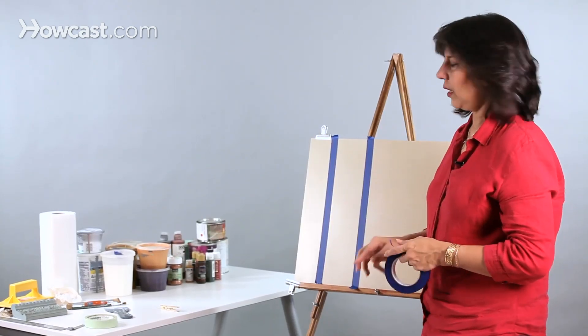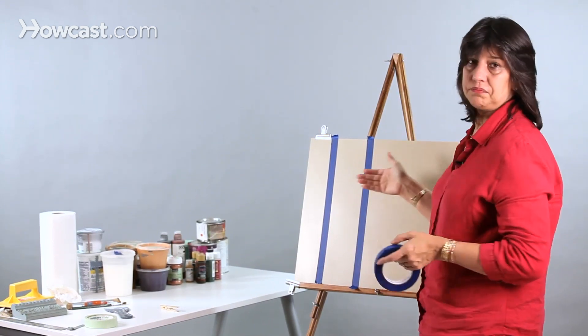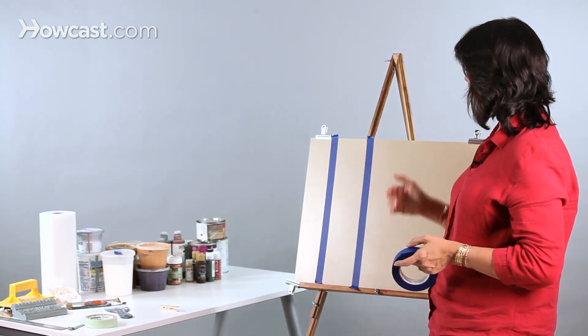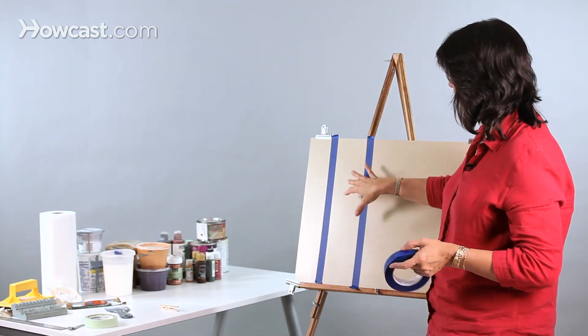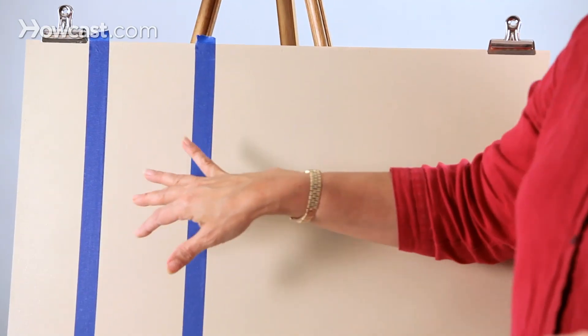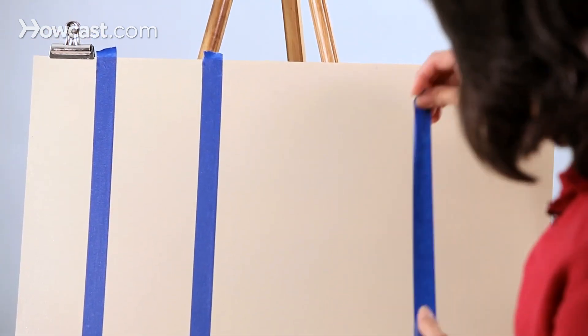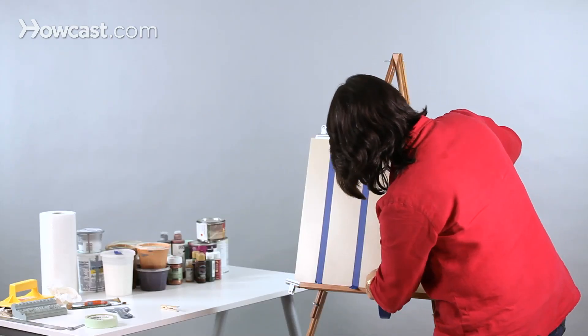You can also use a matte color as your base coat and then do a semi-gloss on top. But I do find that the semi-gloss is much hardier, so it's better if you tape on the semi-gloss as opposed to the matte.